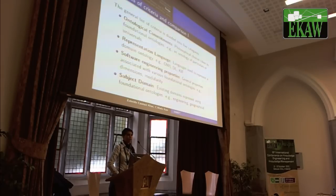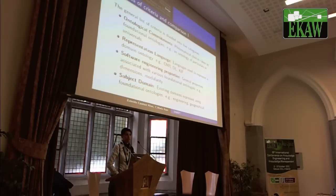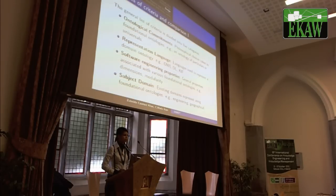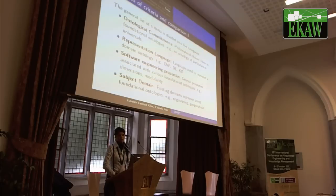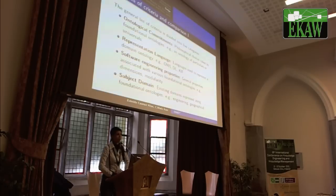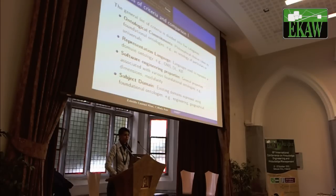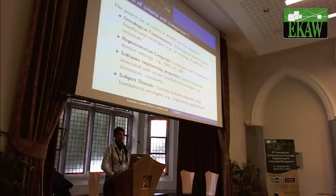For our general criteria list, we identified five important categories. The first is ontological commitments — the philosophical choices that foundational ontologies take on, such as whether the ontology is of particulars, as in Dolce, or of universals, as in BFO. Then there is representation language — the language used to represent a domain ontology, such as OWL, OBO, or KIF.